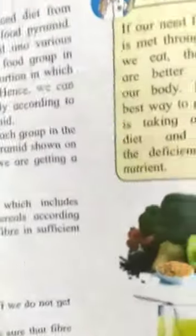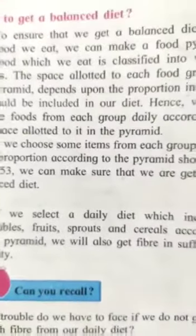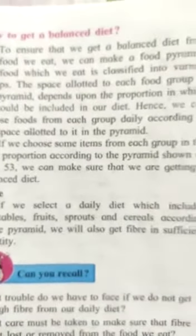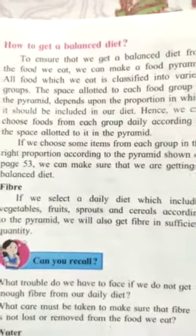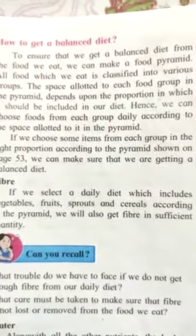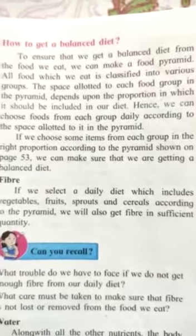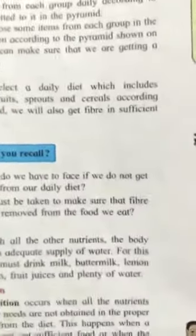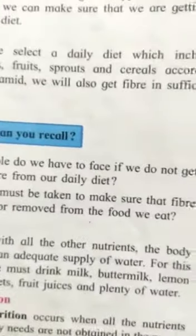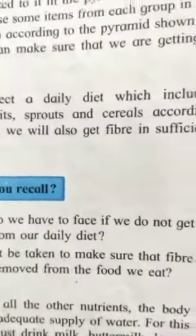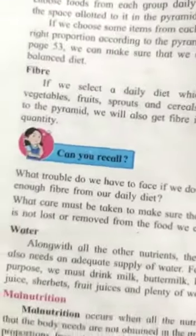How to get a balanced diet? We should eat everything properly. All food we eat is in various groups. We can choose from different food groups which have the right proportion, so that we can get a balanced diet.